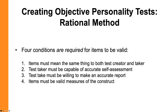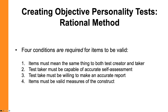The last condition — and this is pretty basic — is that the items must be valid measures of the construct they're trying to measure. If you're measuring honesty, the item needs to measure honesty and not anxiety, anger, or extroversion. One ongoing issue with objective personality tests is that second condition — capable self-assessment — because if you've never been in a specific situation, you don't actually know how you would respond. People may feel confident they know how they'd react, but that's never a given. We need to be careful when asking about hypothetical situations because people don't always have that self-insight.